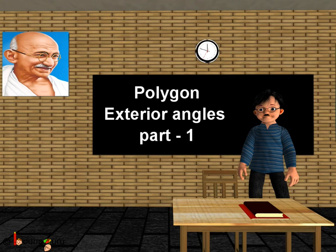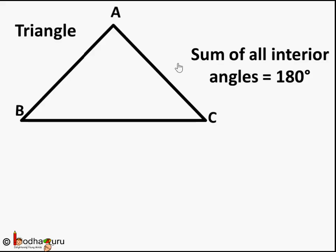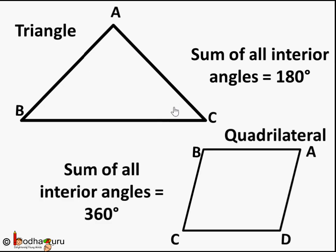Let's revise what we have learned in our previous lesson. We learned about the sum of interior angles of a polygon. For a triangle, the sum of interior angles is 180 degrees — this angle plus this angle plus this angle. For a quadrilateral, it is 360 degrees — the sum of this angle plus this plus this plus this.